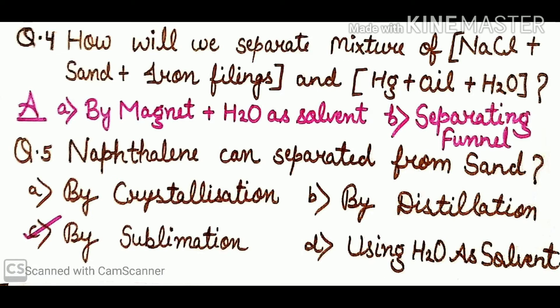The second mixture is mercury + oil + water. This is a combination of immiscible liquids, so we use the separating funnel. On the basis of their density, each component gets separated from the others.